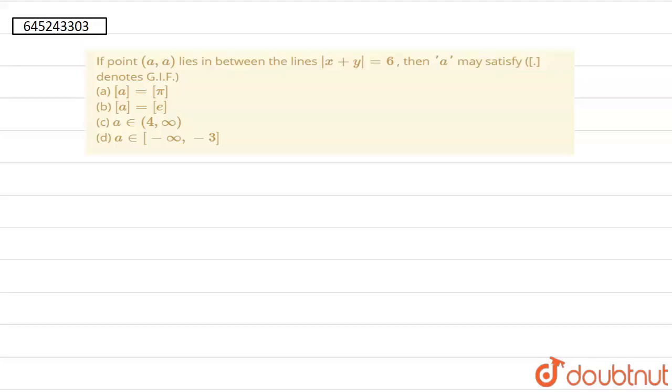So hello everyone, in this question they said that if point A is lying on the lines |x+y| = 6, then A may satisfy and this bracket is not GIF. So first is this, second is this, third is this and fourth is this.